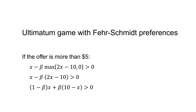If the offer is more than $5, the alpha term is multiplied by zero and the inequality becomes X minus beta times max(2X minus 10, 0) is greater than zero. As 2X minus 10 is greater than zero, that simplifies to X minus beta(2X minus 10) is greater than zero, which can be written as (1 minus beta)X plus beta(10 minus X) is greater than zero. We can see this will always hold for any beta less than 1. So if beta is less than 1, the responder will always accept offers greater than $5.